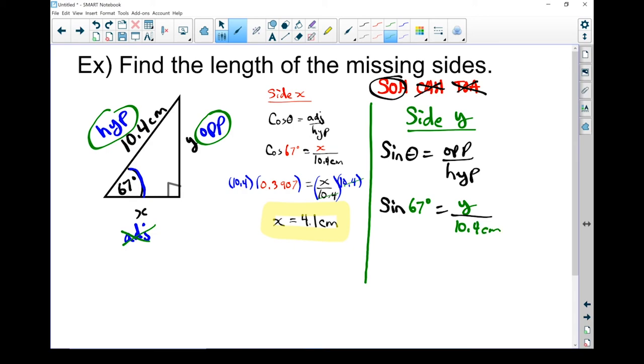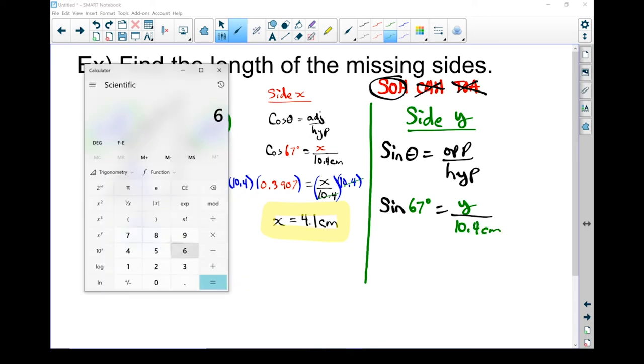Let's calculate the sine of 67. So 67. Trigonometry. Sine. Okay. Sine of 67 is 0.9205 once I round it off.